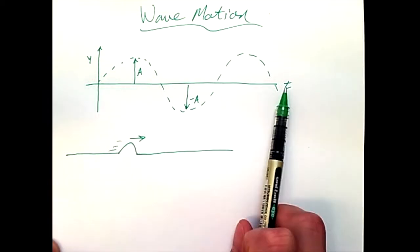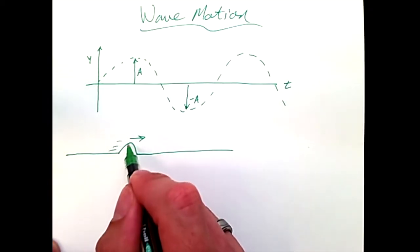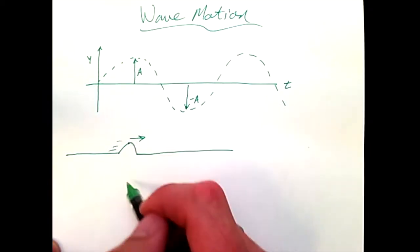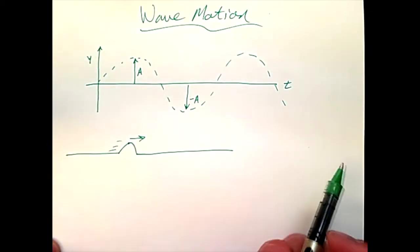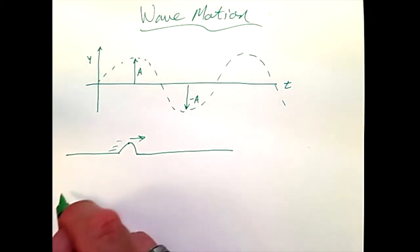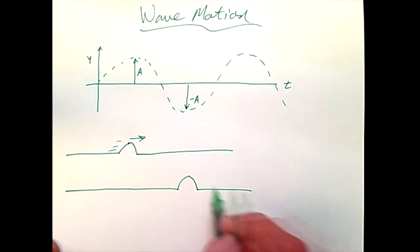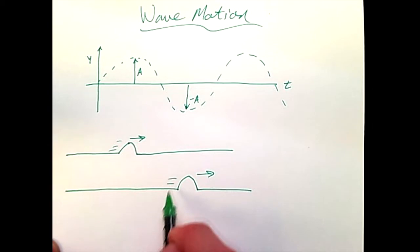This graph would represent the point on the rope that is oscillating up and down as that energy passes through that point. So if I were to look at this later, the wave pulse is now over here moving in the same way across the page.